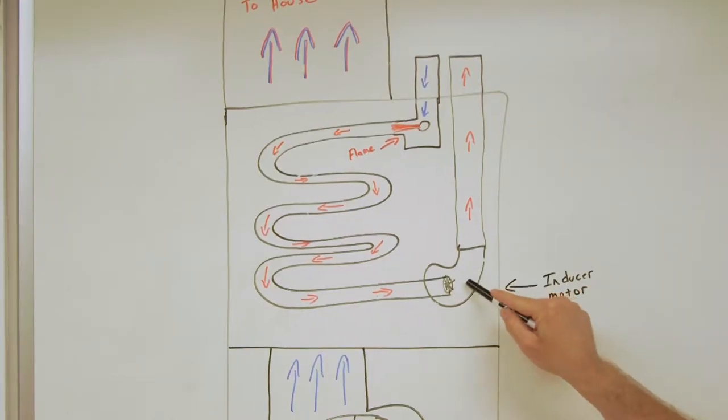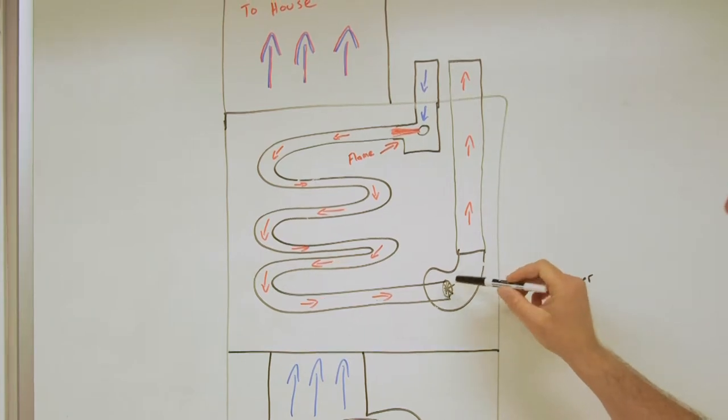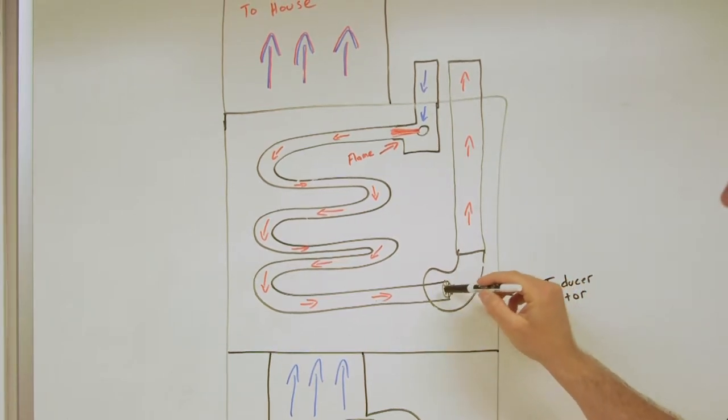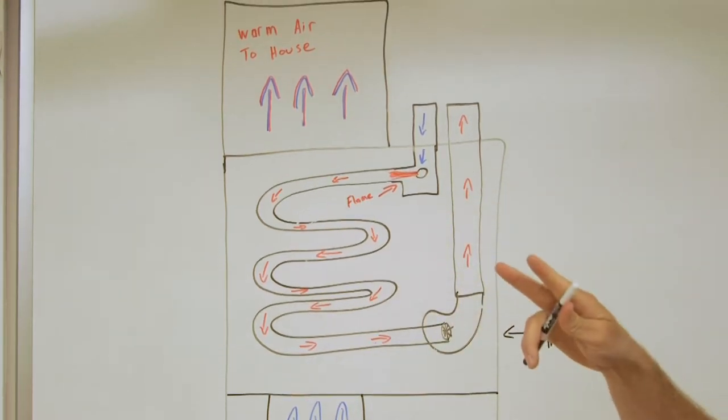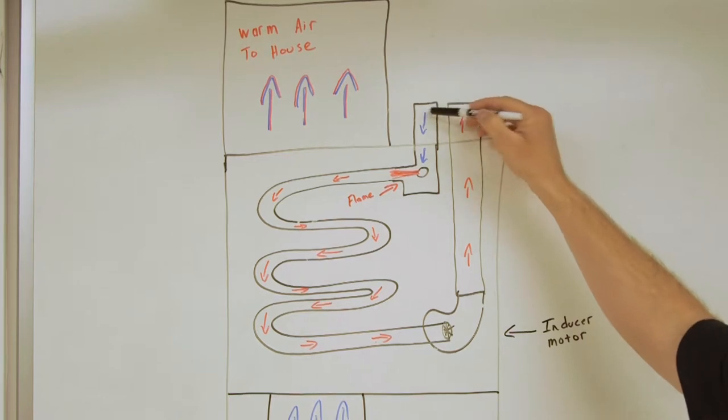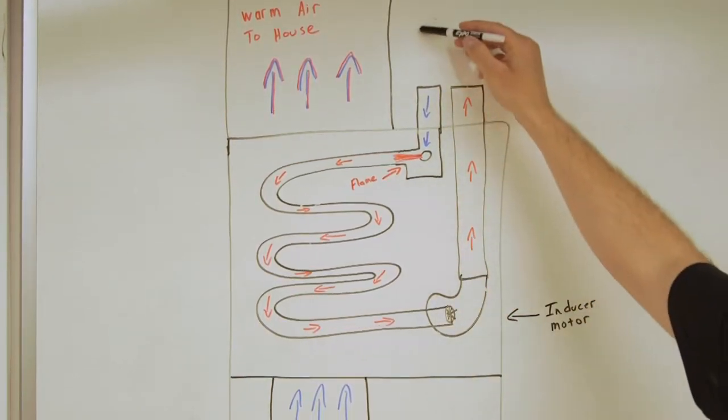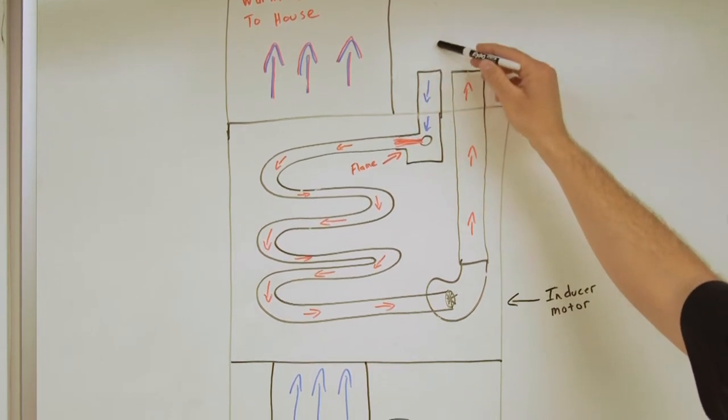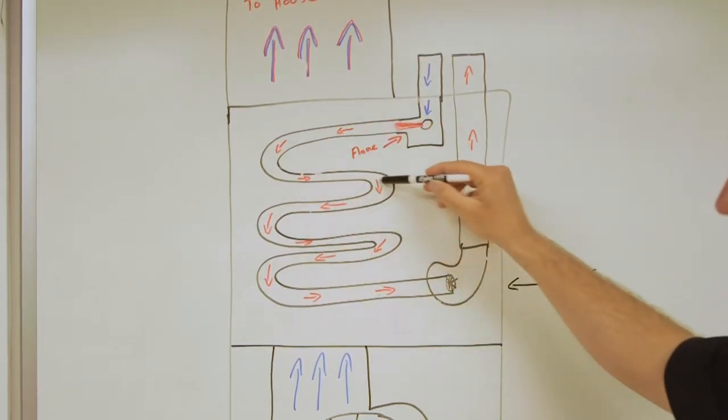So this is where your inducer motor is located at. What it does is it sucks air through your heat exchanger. So you'll see two PVC vents outside your house. These are your two PVC vents. One is intake, one is exhaust. So when that inducer motor turns on, it'll start sucking air through the PVC into the furnace and then through your heat exchanger.